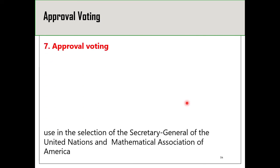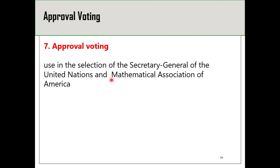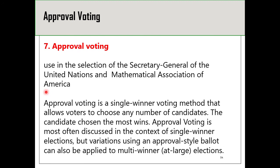Finally, approval voting is used in the selection of the Secretary General of the United Nations and by the Mathematical Association of America. In approval voting, there is no ranking of candidates; rather, all votes are considered first choice votes. You can vote for as many candidates as you like, and each vote is treated as a first place vote. The candidate with the most votes is declared the winner.